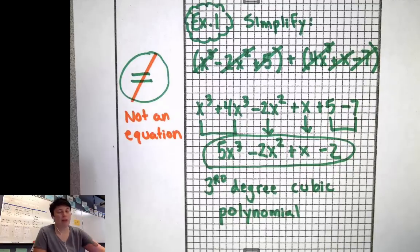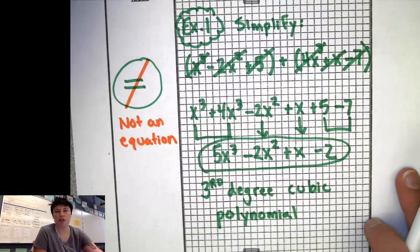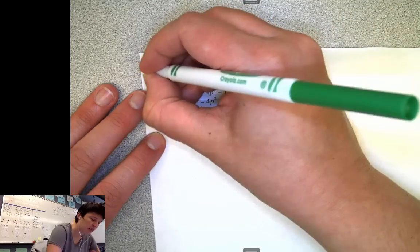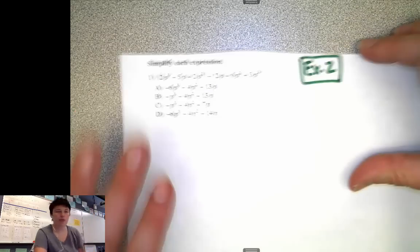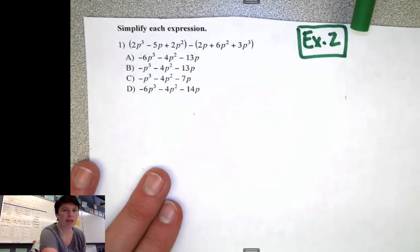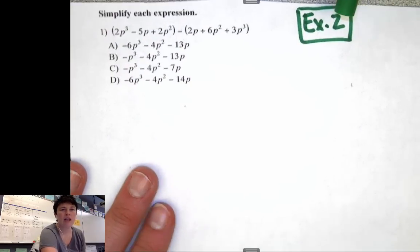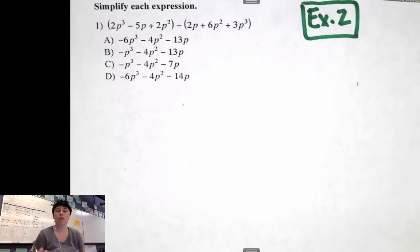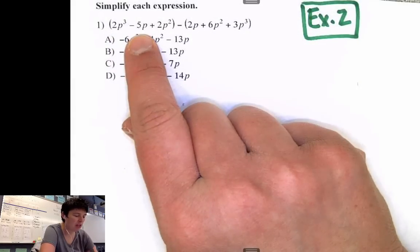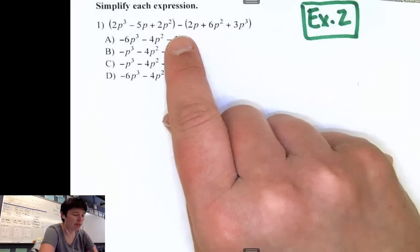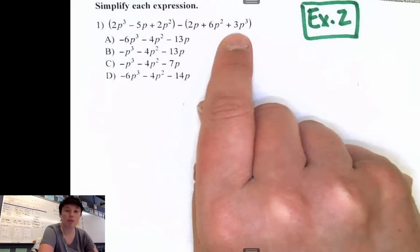These are pretty good problems because we can practice multiple choice strategies with them. I'm going to take one of these problems and make it a multiple choice problem — Example Two. The problem is: 2p to the third minus 5p plus 2p squared, minus parentheses 2p plus 6p squared plus 3p to the third. And then we have choices A, B, C, and D.